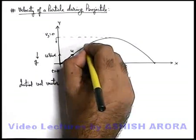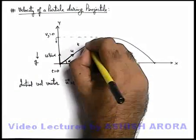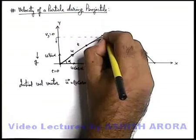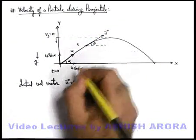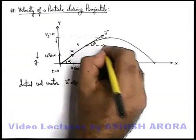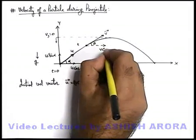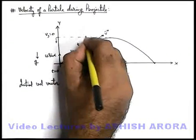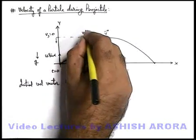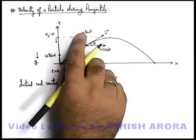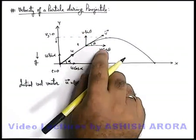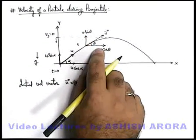So at any time t, if we talk about the particle say it is moving with a velocity v vector, it is making an angle theta with the x direction. So at this time its velocity in x direction would be v cos theta, and in y direction it would be v sin theta.